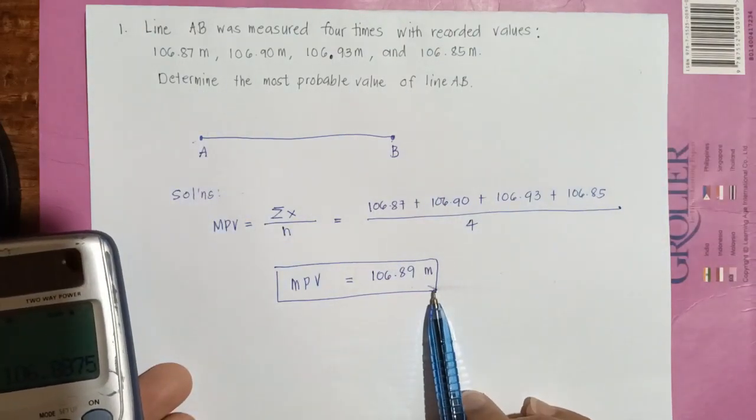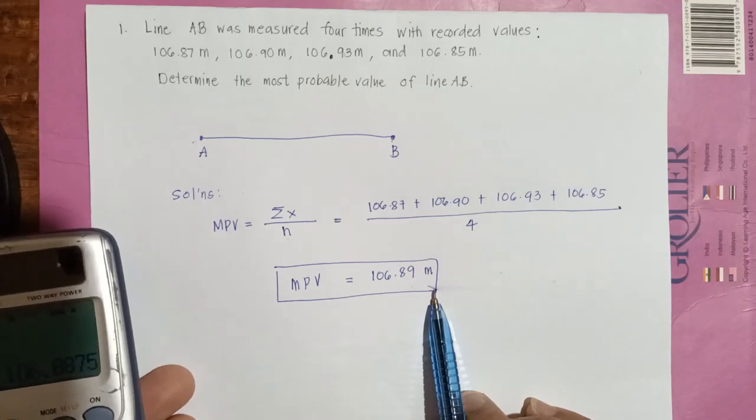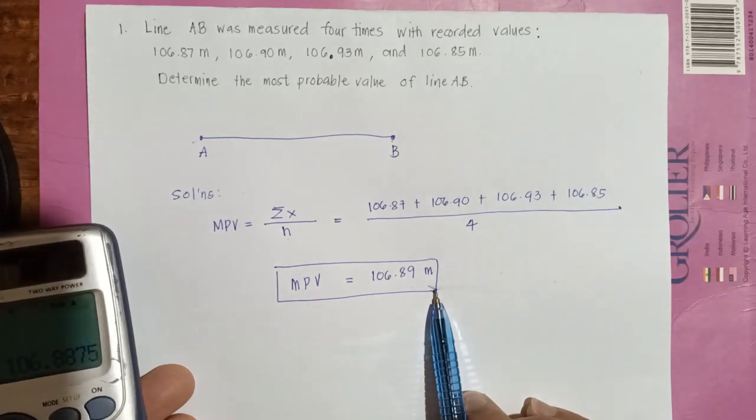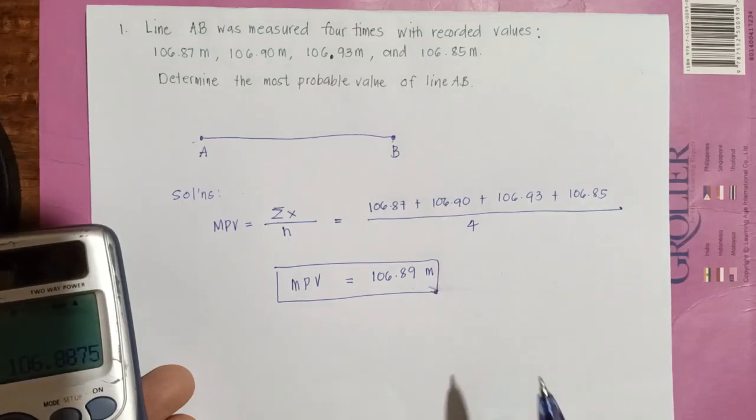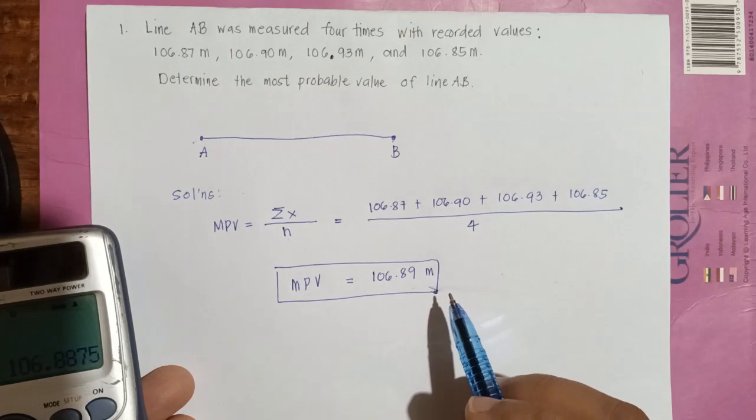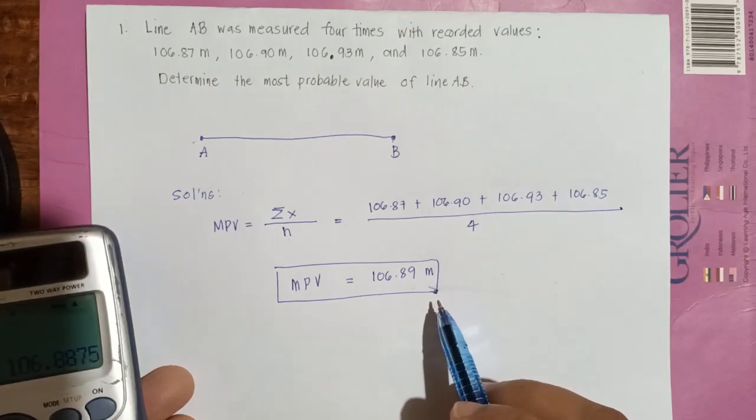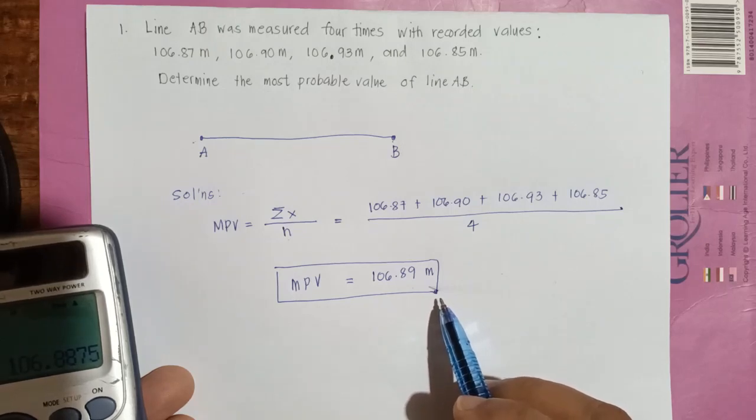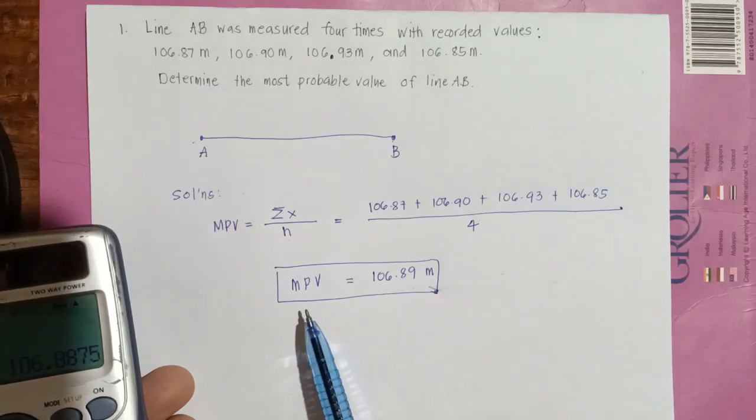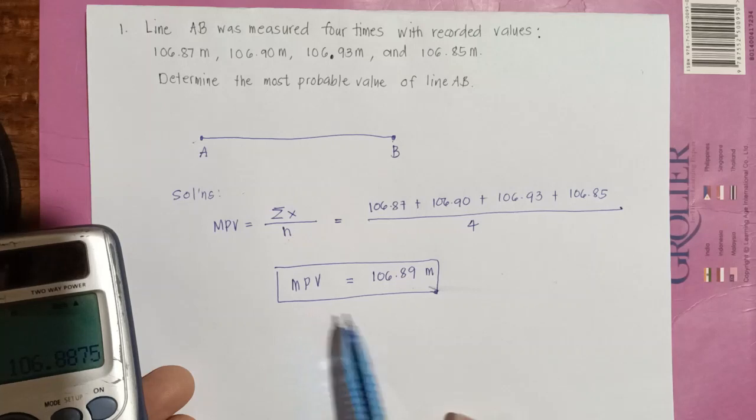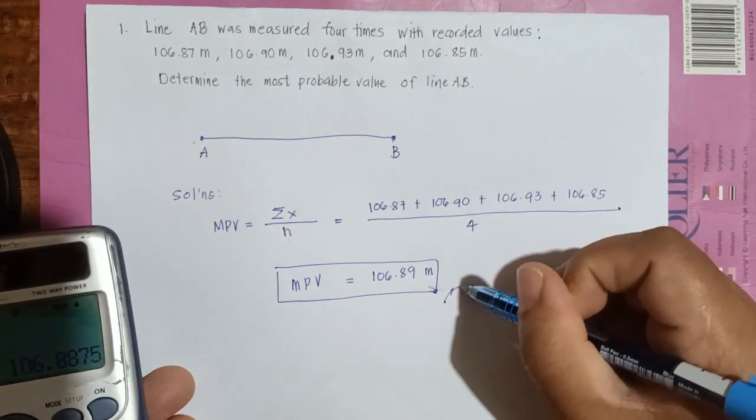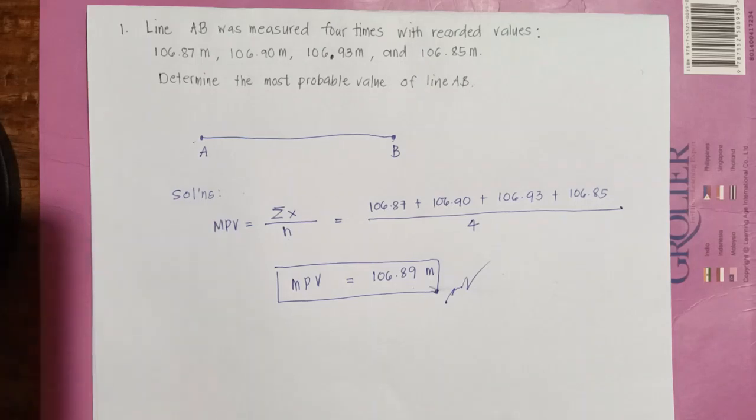So this is the most probable value of line AB. Among the measurements, this value is the closest value. As what we have discussed previously, the true value cannot be determined—the exact value can never be known. However, we can always determine the value that is closest to that true value, and that is what we call the most probable value. So this is the answer for example number one.